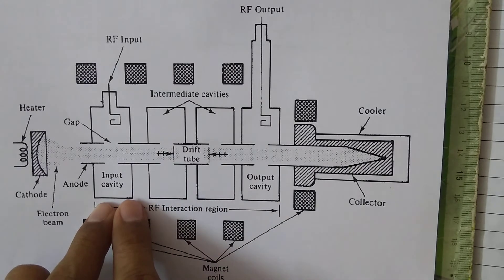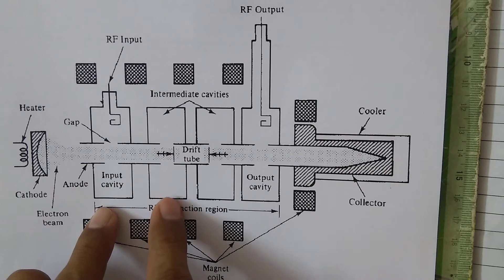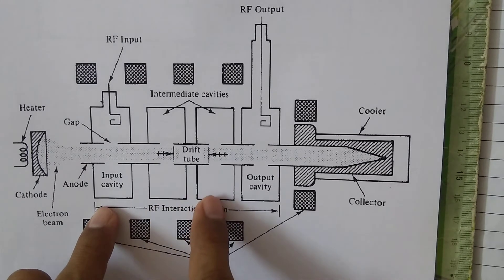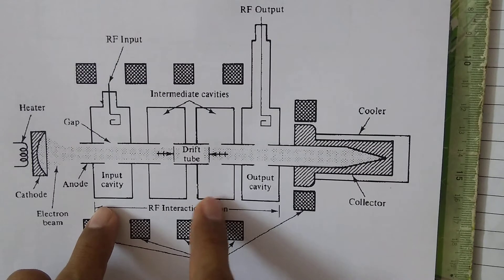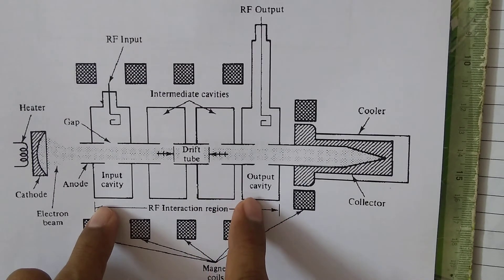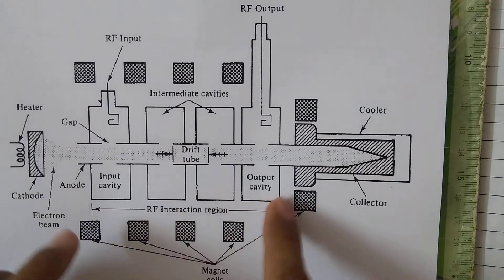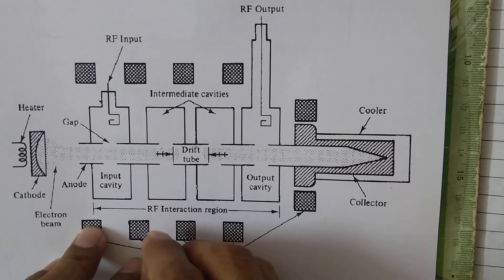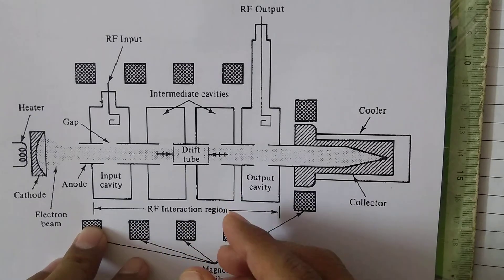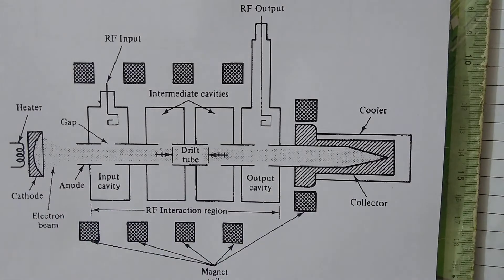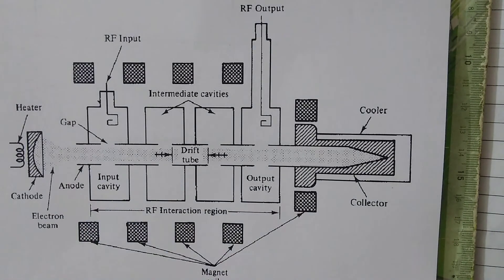All these cavities can be designed at slightly different frequencies. For example, the first cavity could be designed at 1.1 GHz, the second at 1.2 GHz, the third at 1.3 GHz, and the fourth at 1.4 GHz. By designing at slightly different frequencies—this is just an example and may not be the actual case, as it depends on the application—we can improve performance.